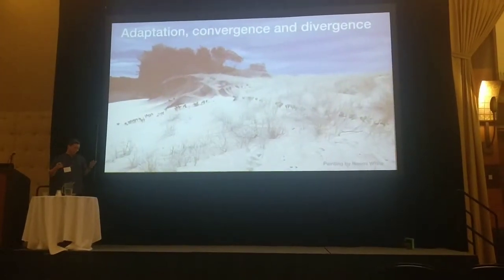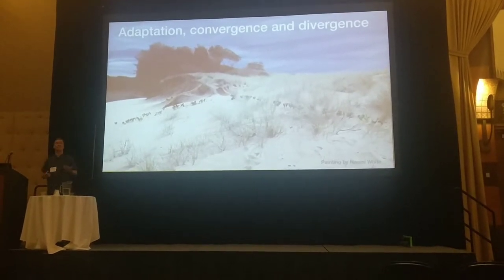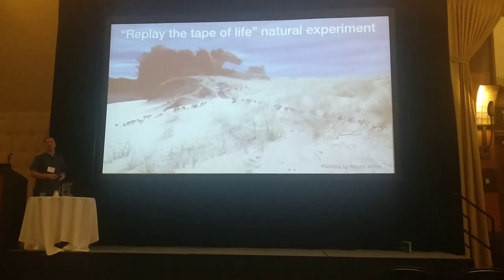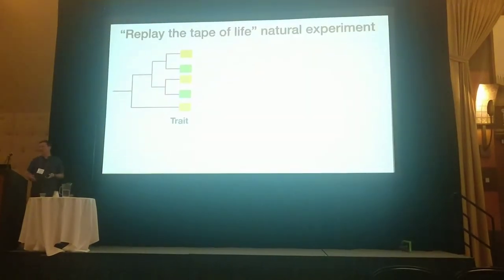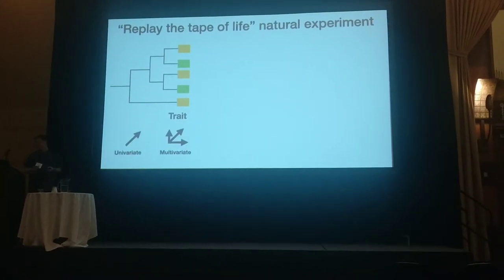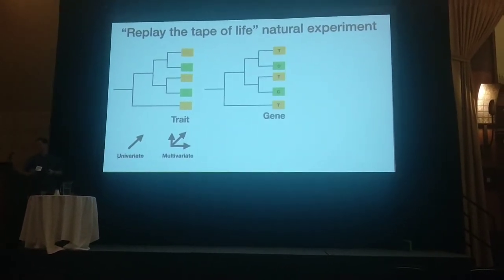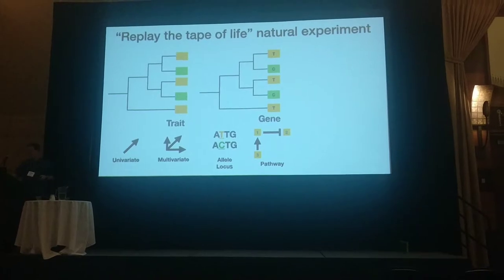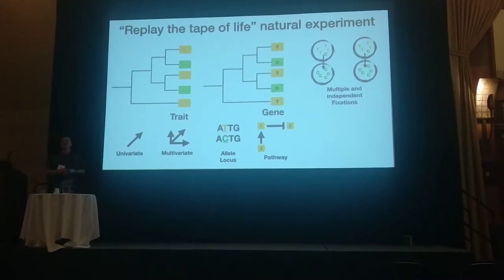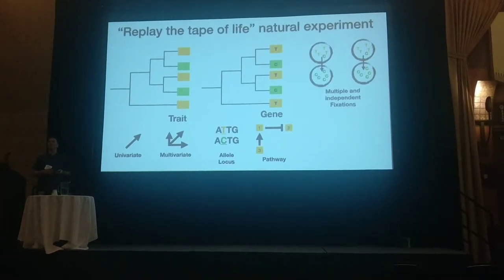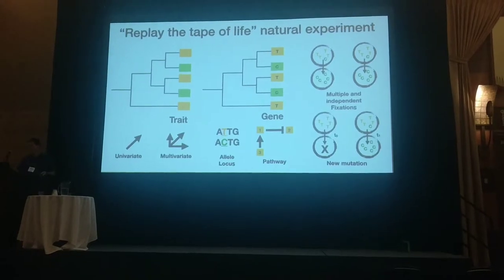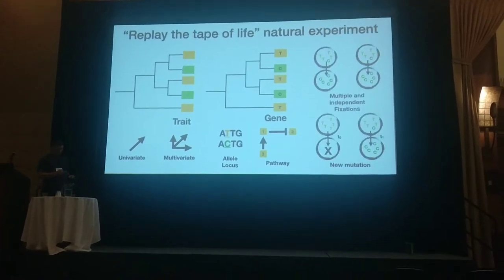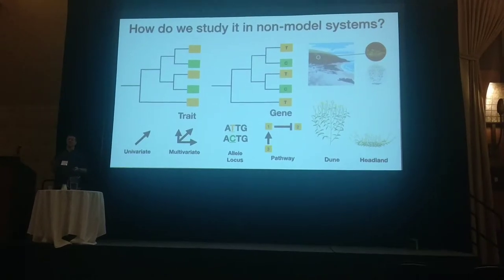What we have here is one approach to understanding adaptation, convergence and divergence in a system where we can experimentally test the idea whether we can reclaim the fate of life. We can do this at the trait level, either univariate or multivariate, at the genetic level, either the locus or the pathway. We can also ask whether the traits involved in parallel evolution come from standing genetic variation or from new mutation. We are interested in solving many of these questions, and I want to tell you what we have been doing in the Senecio-Lotus complex with respect to the molecular basis of adaptation.